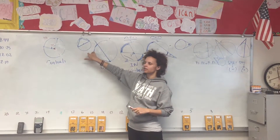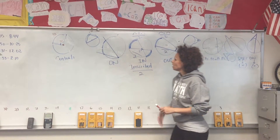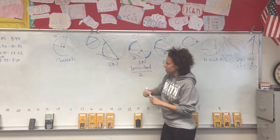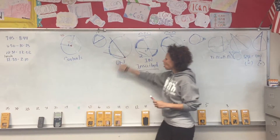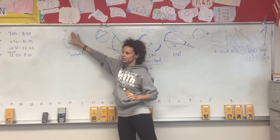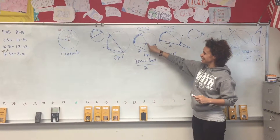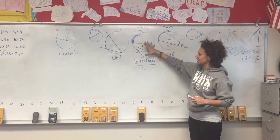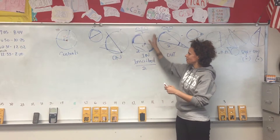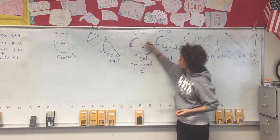To get from inside to outside you just need to multiply by two. So on the circle, divide by two to get the angle in the middle. If the angle is not on the circle but inside the circle, inside means you add the two arcs together and divide by two.